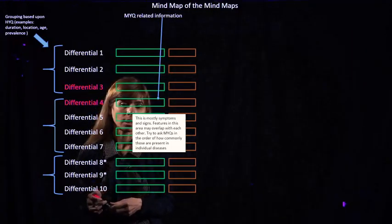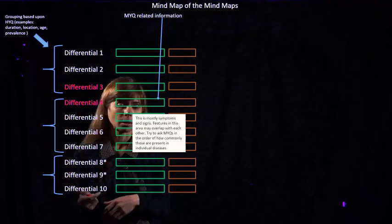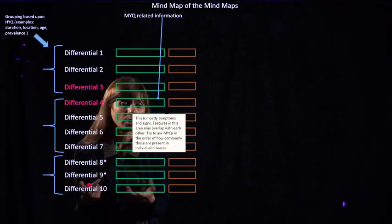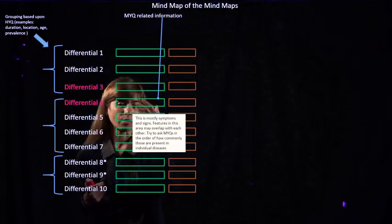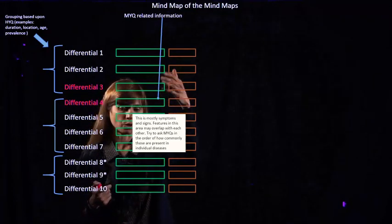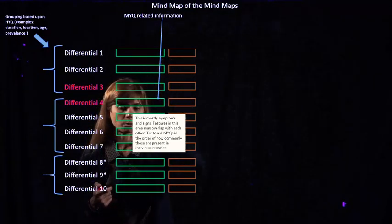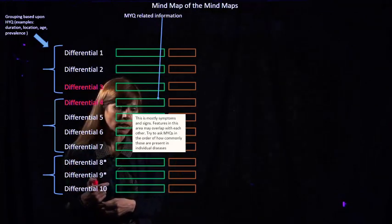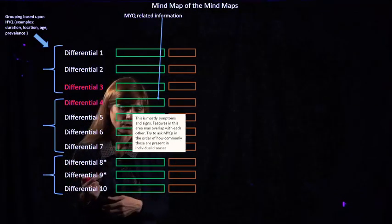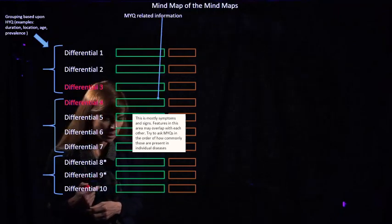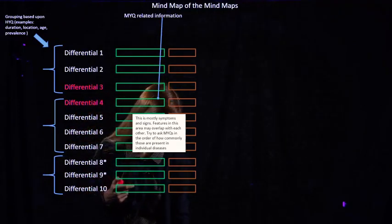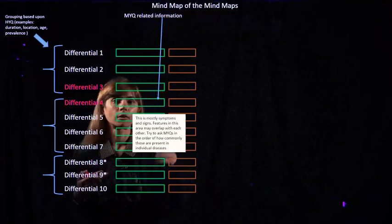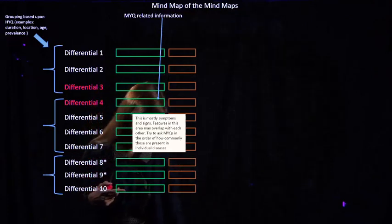We want to make sure that symptoms and signs are listed in the order of how prevalent they are for each disease. For example, if a patient is coming in with low-grade fever and you're thinking about bronchitis, then cough should be the first symptom that we should list in this box because that is a very common feature of bronchitis. You will become more familiar with that as the course goes on.